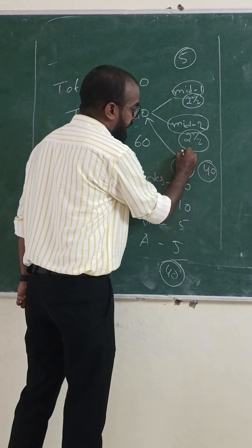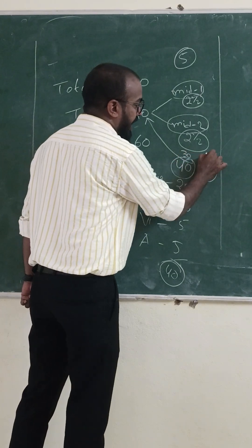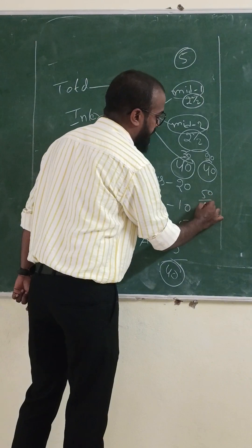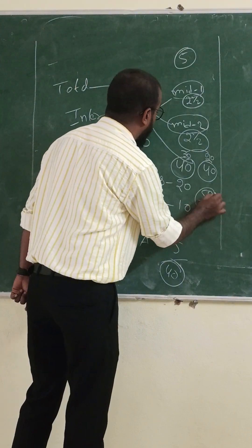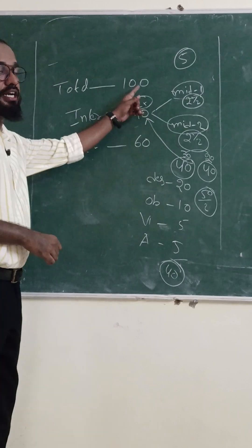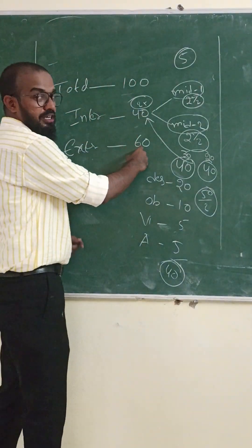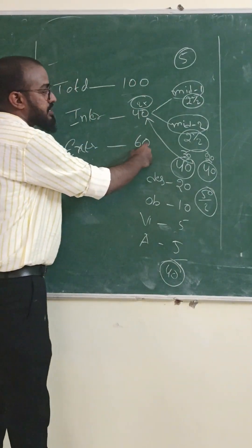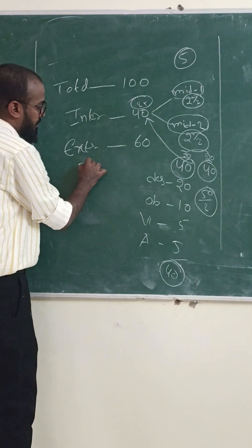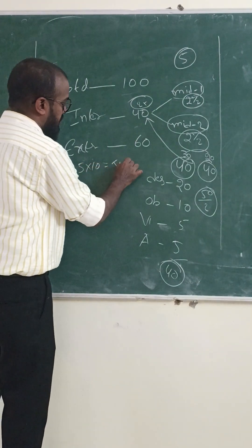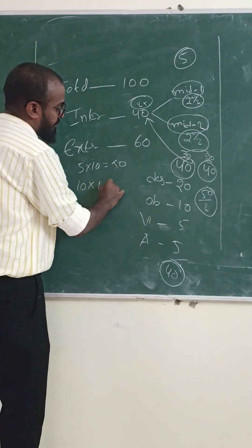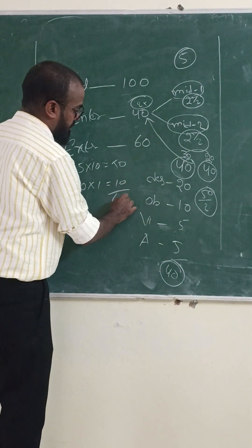For example, if a student gets 30 marks in mid-1 and 20 marks in mid-2, the total is 50 divided by 2, giving 25 marks as the internal mark. For external examinations, the total is 60 marks — comprising five 10-mark questions (50 marks) and ten 1-mark objective questions (10 marks), totaling 60 marks.